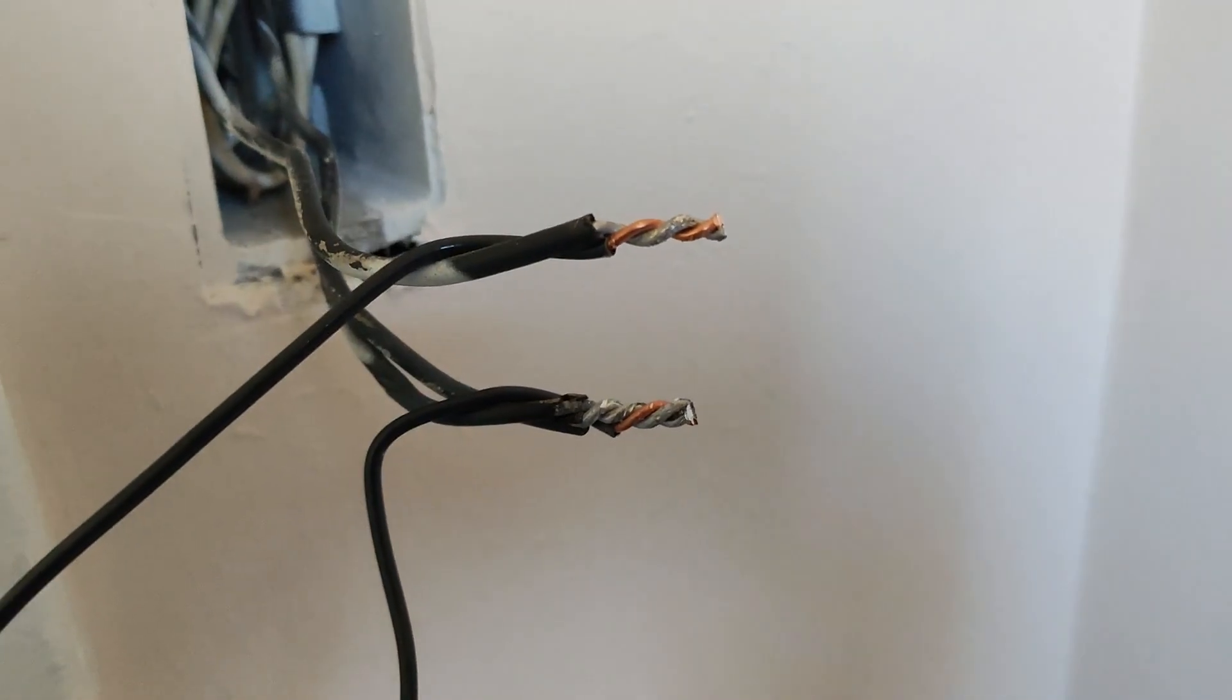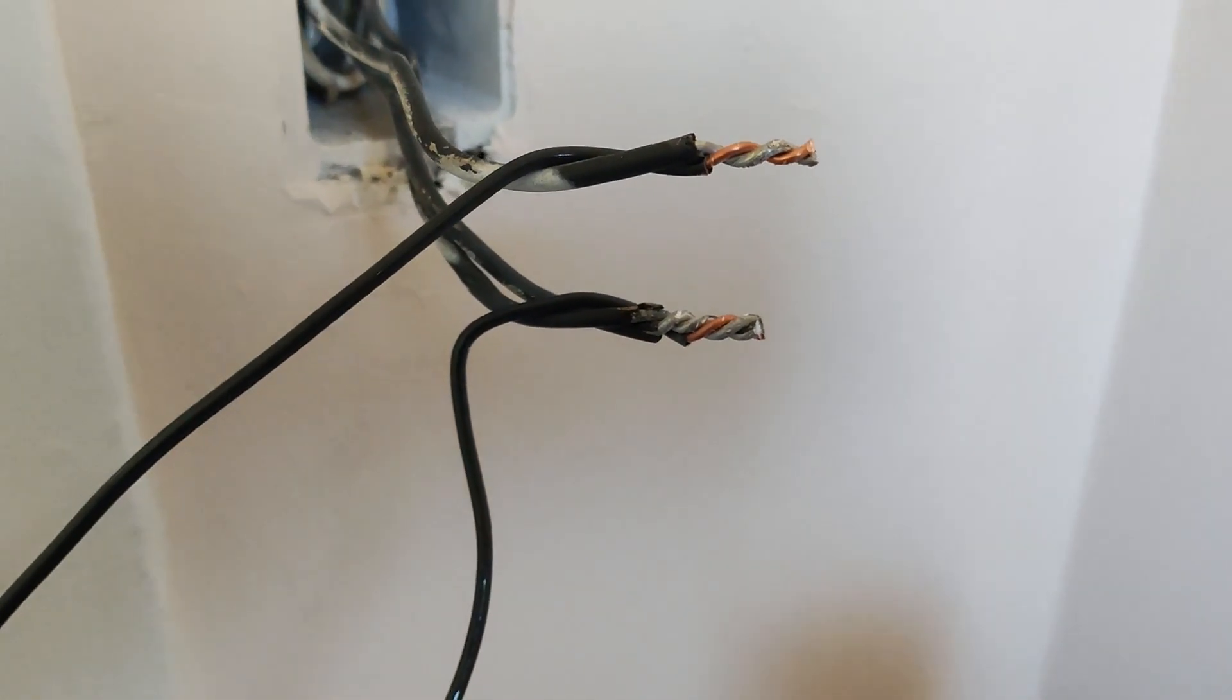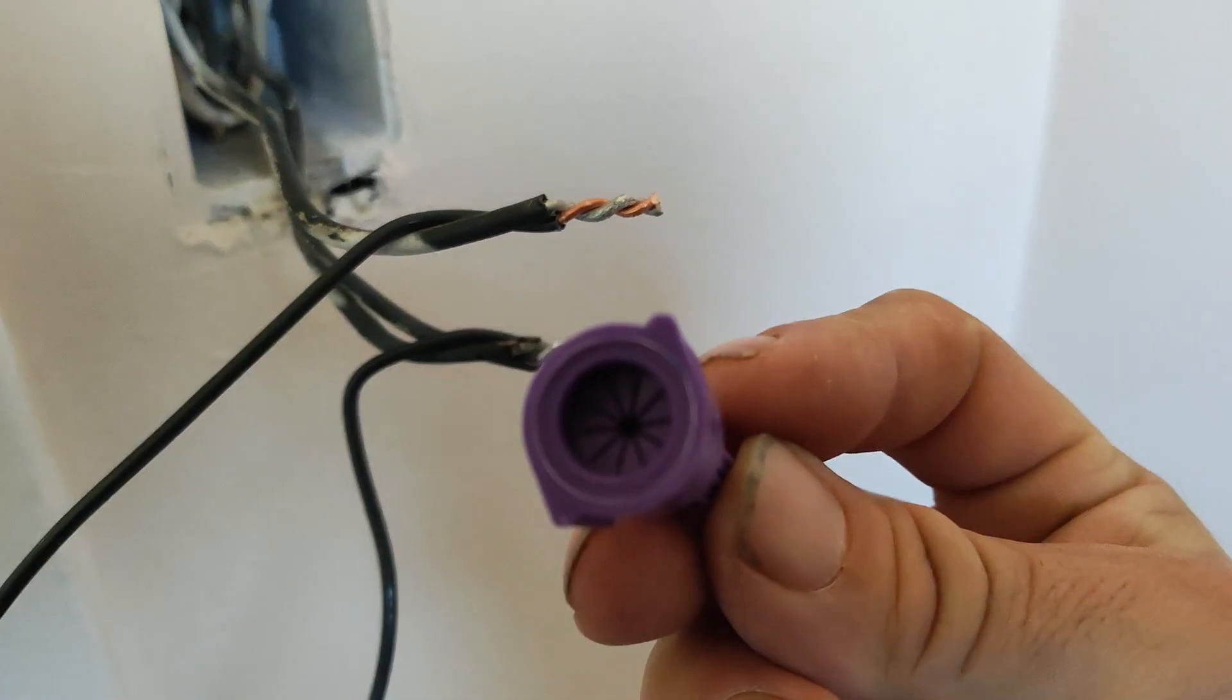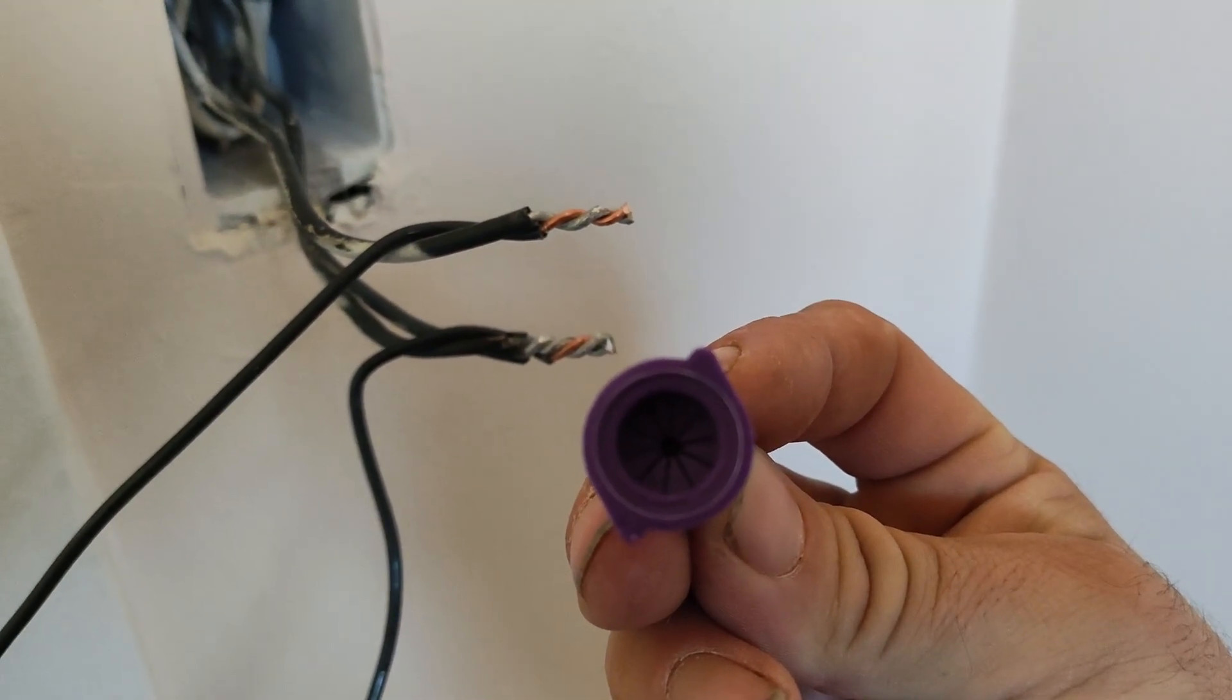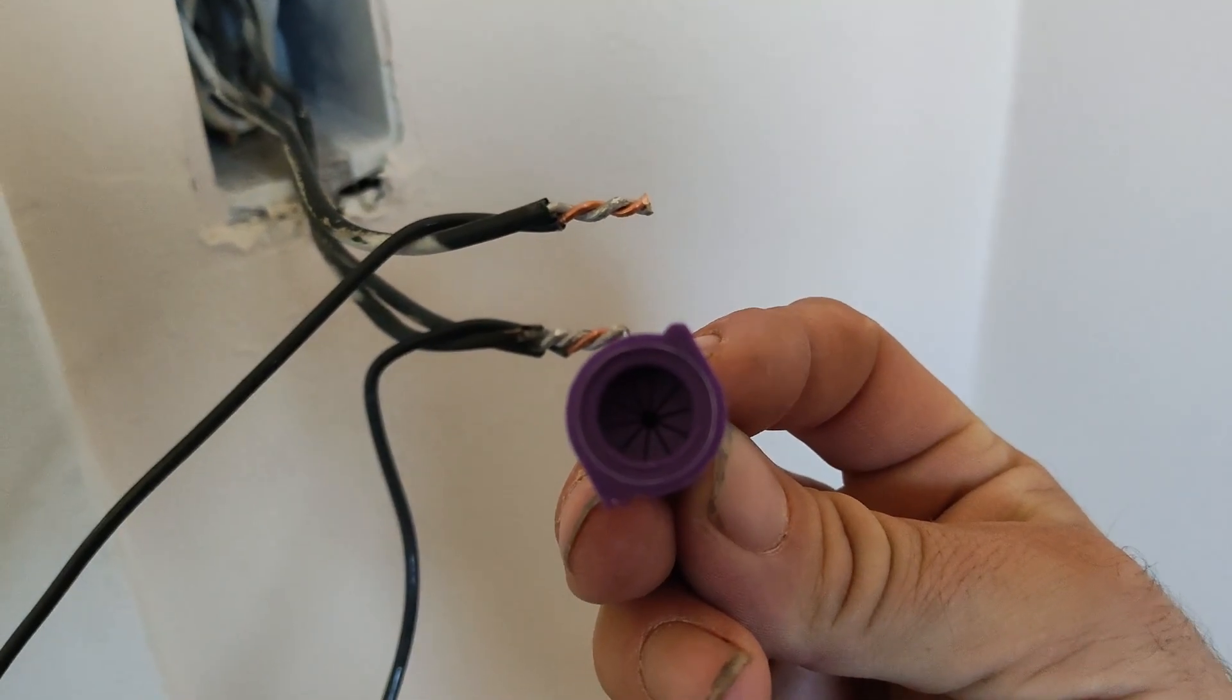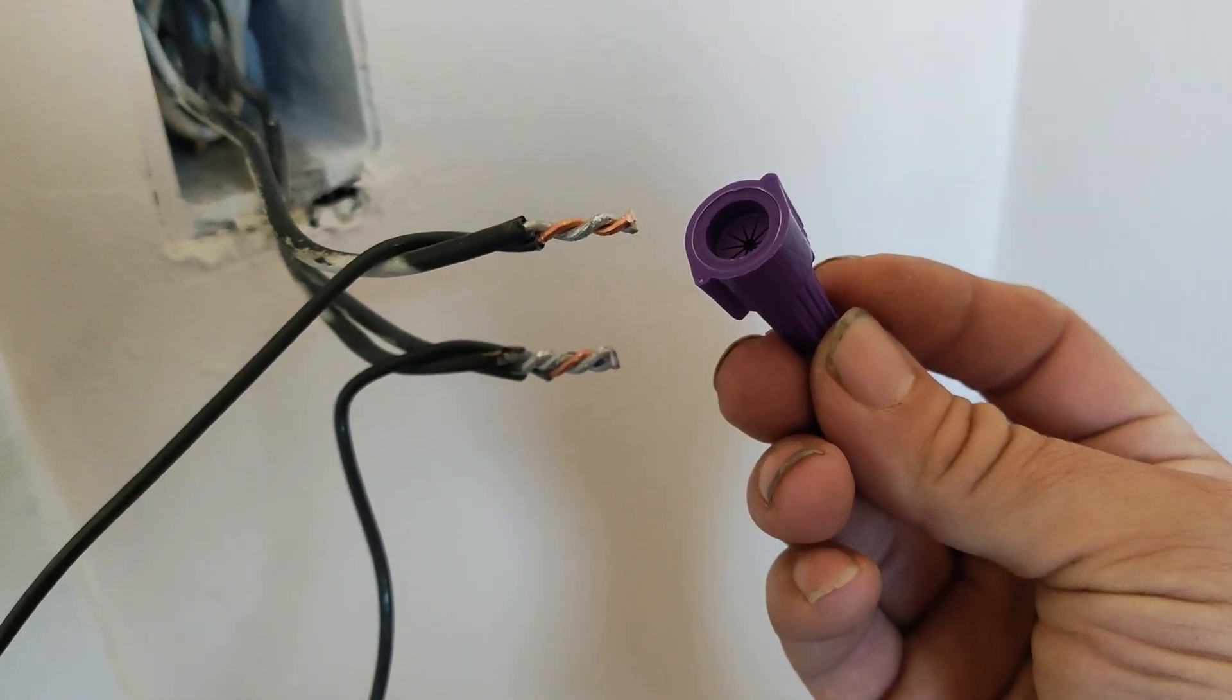All right, so we've got the wires ready to have the wire nut put on them. You'll notice that these wire nuts have a little spot in there where it's actually got some Noalox, which is like a gel that prevents the oxidation between the different wires, the different types of metals.